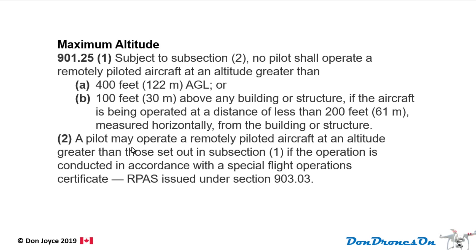Okay, so let's pick this apart. We can kind of safely put aside subsection 2 for the moment because that's basically if you've got an SFOC. So it says you can't fly at an altitude greater than 400 feet, or — and here's the problem, the magic word "or" — 100 feet above any building or structure if the aircraft is being operated within this horizontal radius or distance from the building. So I originally interpreted this as: you can either be 400 feet up maximum, or 100 feet above any building or structure. So if there's a building or structure, you can't be any higher than 100 feet. Clearly, that's what the word "or" means. Well, apparently that's not really what they mean.